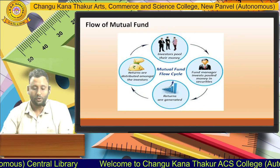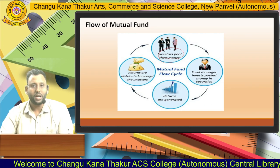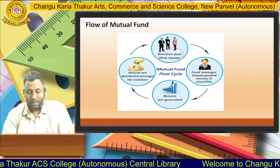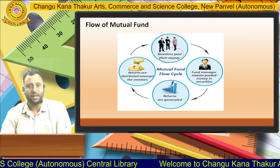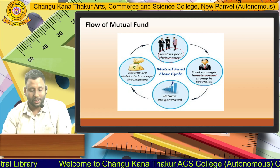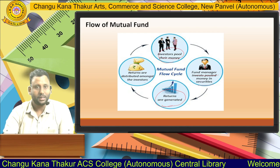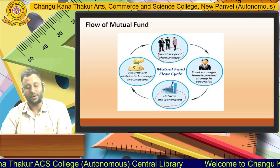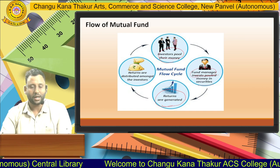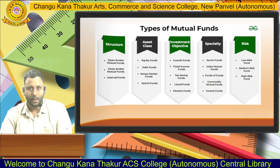Next, how mutual fund flows and operates: investors pool their money to the fund manager. The fund manager takes the pooled amount from investors and invests it in various securities in the share market, which then generates returns. These returns are distributed amongst the investors. The investors again invest this money with the fund manager, who again invests it in the stock market to generate returns. This is the flow of how mutual funds operate.